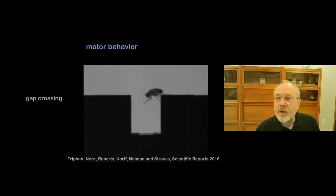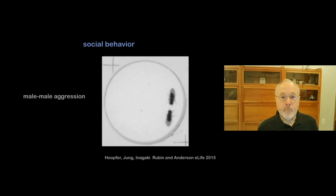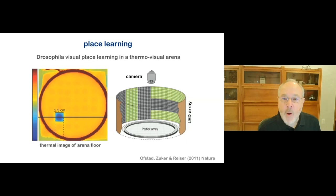Flies display complex motor behavior, as illustrated by this fly crossing the gap. Flies are able to judge their body size and judge the width of the gap, so as not to attempt to cross gaps that are too large for them. Flies also display a range of social behaviors, illustrated by this example of male-male aggression. A fly's wins and losses affect its future behaviors, and flies can establish dominance hierarchies.